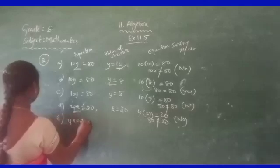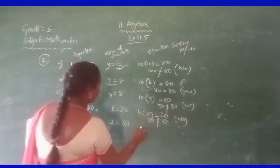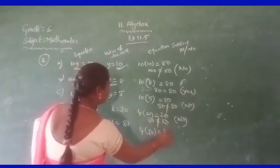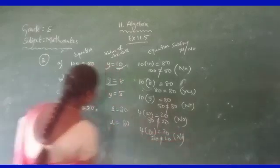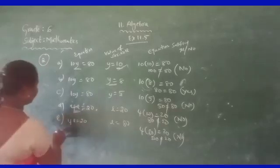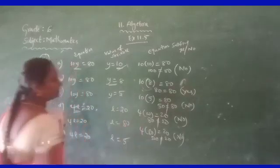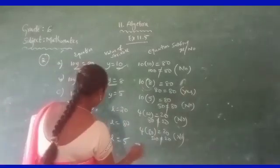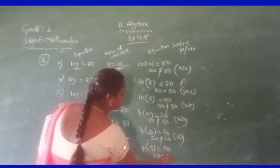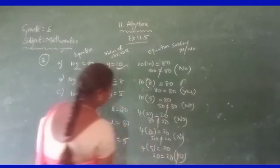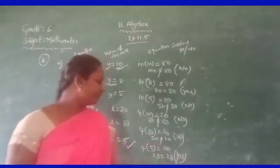E: 4L is equal to 20, L is equal to 80. Substitute: 4 times 80 is not equal to 20, so it is not satisfied. When does this equation get satisfied? If you take L is equal to 5: 4 times 5 is 20, and 20 is equal to 20 — it is satisfied. So L equals 5 is the solution of this equation.